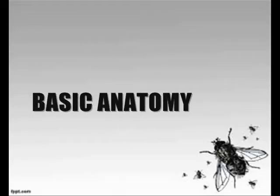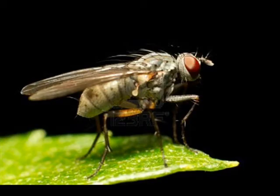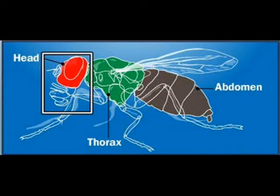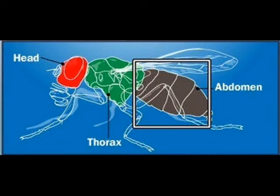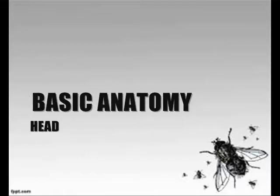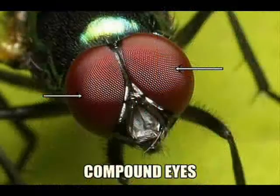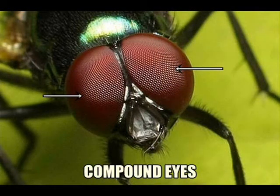Let's now discuss the basic anatomy of flies. Like all insects, a housefly's body is covered with a hard exoskeleton of chitin and is divided into three sections: the head, thorax, and abdomen. A pair of large compound eyes covers most of the housefly's head. Each eye is composed of 3,000 to 6,000 simple eyes, which provide an excellent mosaic view of everything to the left, right, front, and above the fly.